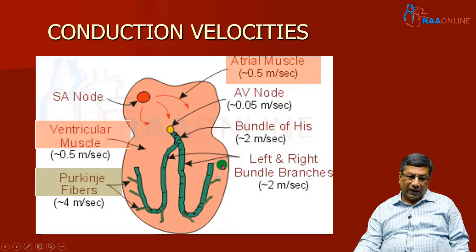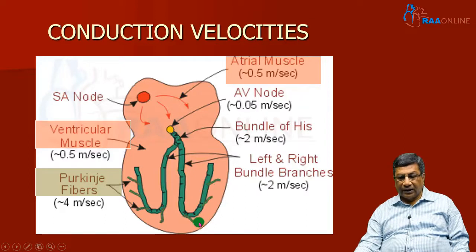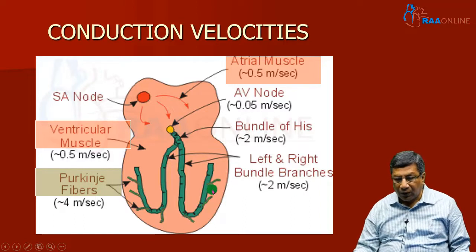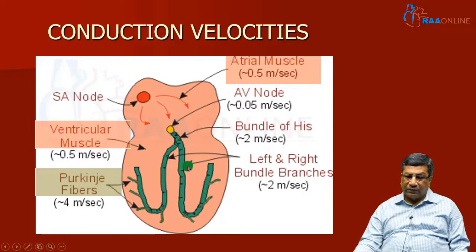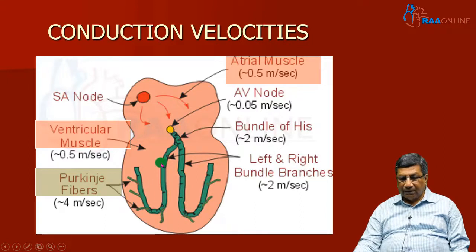The concept is: whenever a portion of my ventricles is not receiving the impulse through the specialized conduction system of the heart, that ventricle has to be depolarized through the muscle. Conduction through the muscle occurs at only 0.5 meters per second. The most common cause of QRS widening is a bundle branch block. In bundle branch block, one ventricle's bundle is not supplying the electrical current.